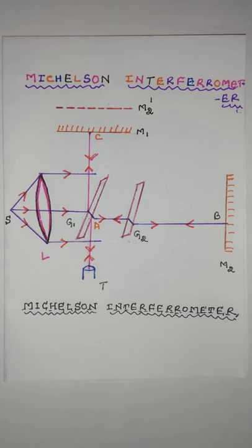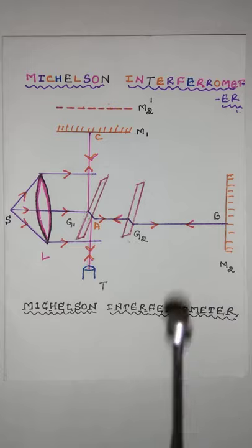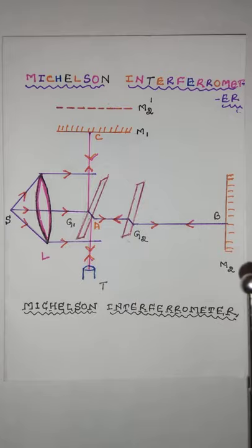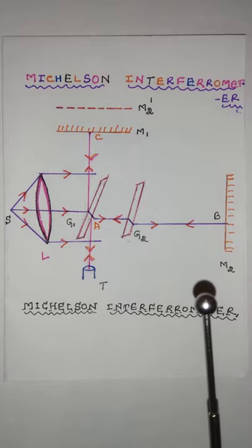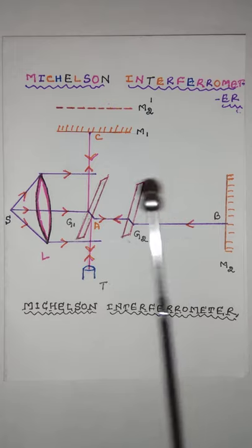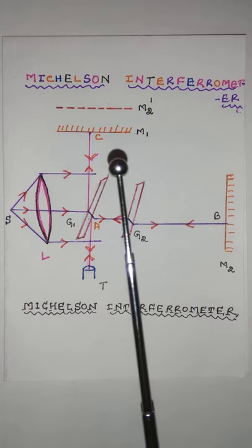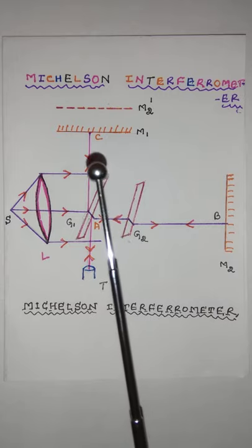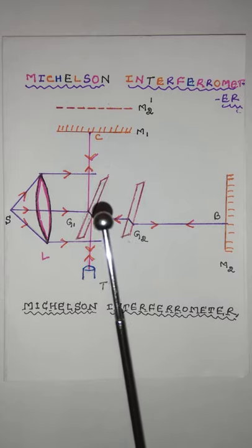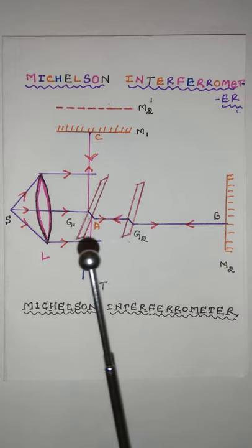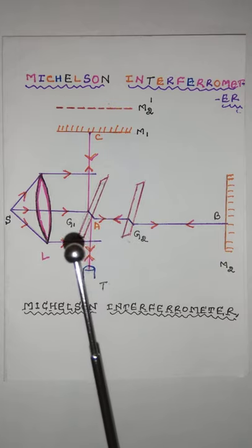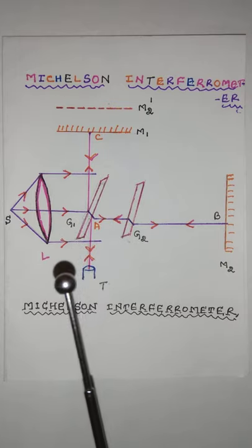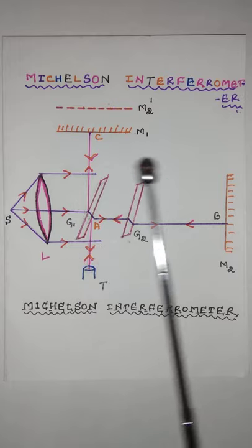It produces circular fringes. Concentric circular fringes are obtained when both mirrors M1 and M2 are mutually perpendicular. The image M1' is at M2 and is parallel to M1. M2 and M1' form the equivalent parallel air film, and the effective thickness of the air film can be varied by moving mirror M1 parallel to itself.